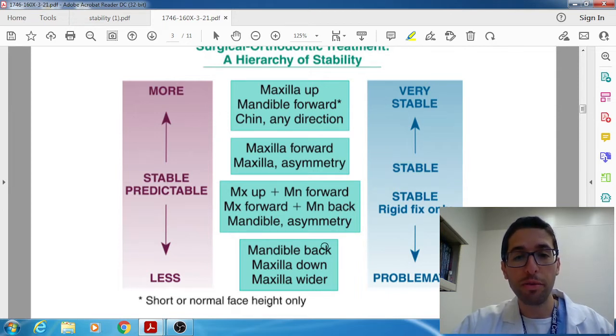And then finally this fourth category of problematic these are very unstable these are a high rate of relapse they were isolated mandible back so notice when you did a two jaw mandible back it was actually fairly stable but when you do an isolated mandible back they saw that they had a higher degree of relapse and then maxilla down and maxilla wider those were also considered problematic and had a higher degree of relapse.